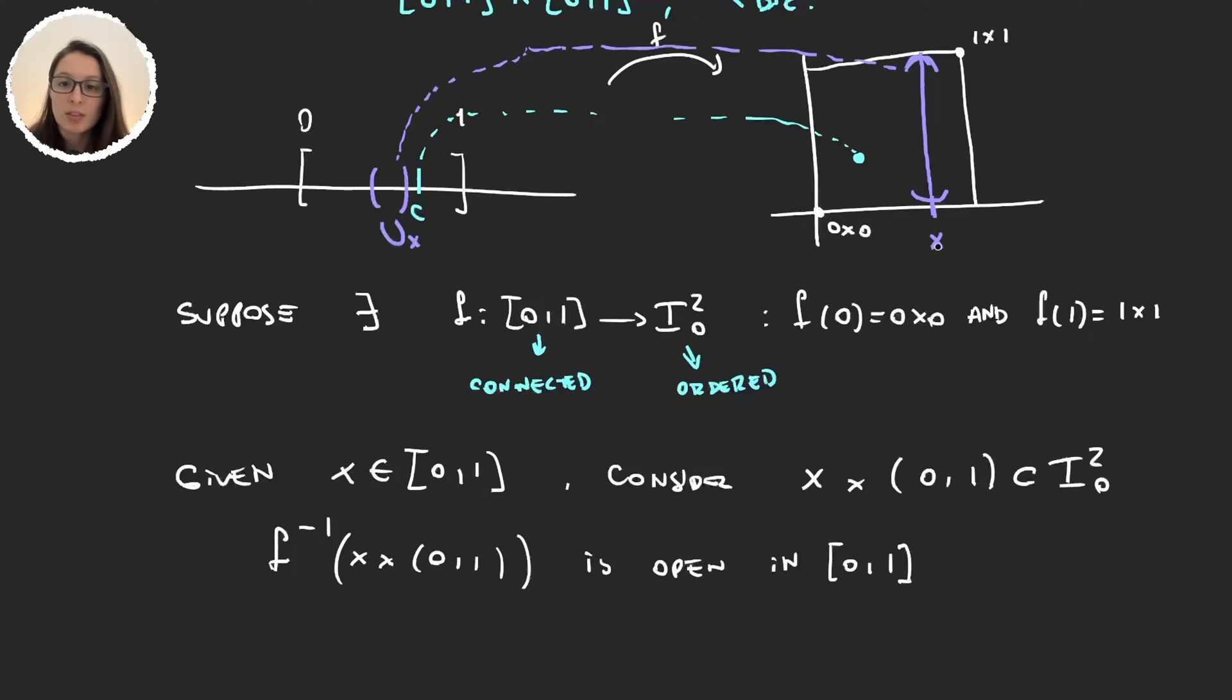So the preimage of this is going to give us some set here, well let's call this set U_x because it's determined by this element x I took on [0,1], and if we take another number here let's call it y and I take the same interval y × (0,1) open, then this preimage will also give me an open set here that will be disjoint with the other one and this one will be U_y.